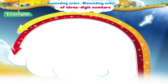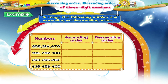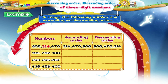Let us revise what we have learnt. Arrange the following numbers in the ascending and descending order. For the first set of numbers, the ascending order is 314, 470 and 806. And the descending order is 806, 470 and 314.